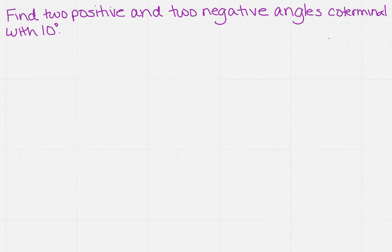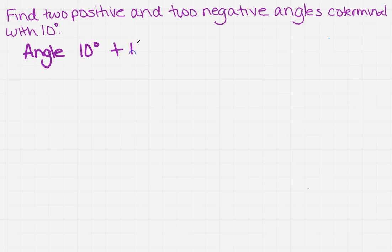We want to find two positive and two negative angles that are coterminal with 10 degrees. Remember, we have a formula that says any angle — in our case 10 degrees — if we add k (a constant) times 360 degrees, that's always going to be coterminal.